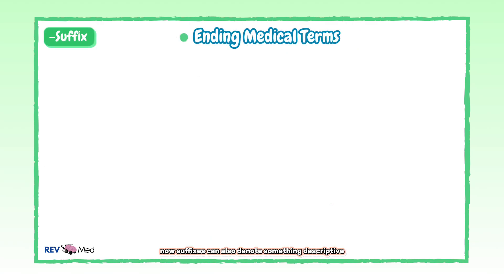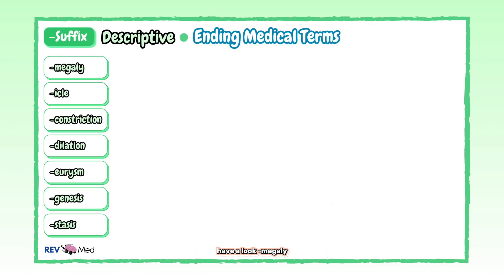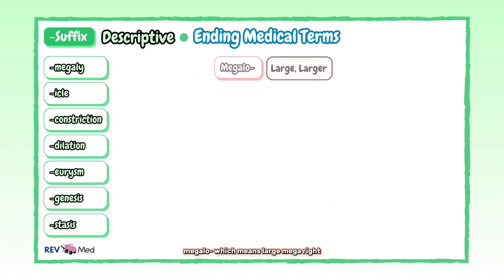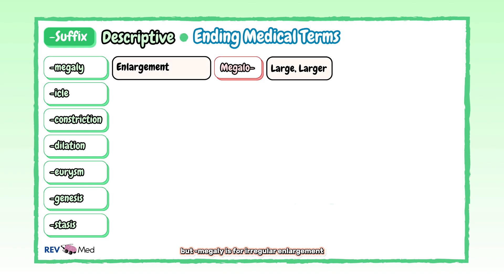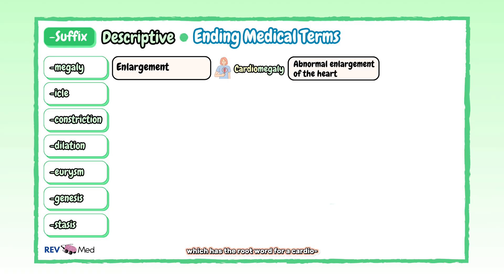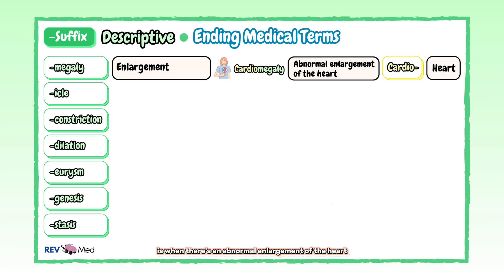Now suffixes can also denote something descriptive. "-Megaly" will remind you of the prefix "megalo", which means large. But "-megaly" is specifically for irregular enlargement. For example, in cardiomegaly — which has the root word "cardio" for heart — there is an abnormal enlargement of the heart.